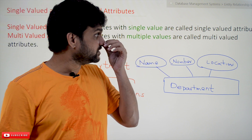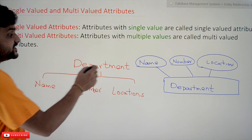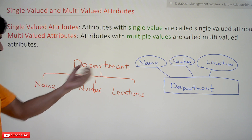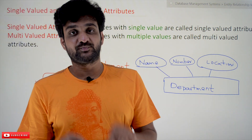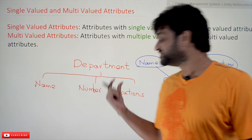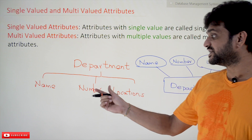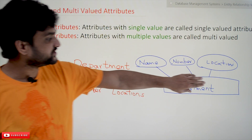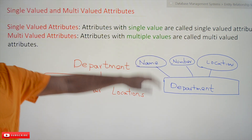They look very simple, so we'll try to understand this concept using a real world example. In the company database, we have taken the department entity type. The attributes of this entity type are name, number, and locations. Our suggestion is to pause this video for a minute and guess which one is a single valued attribute and which one is a multi valued attribute based upon the definition.